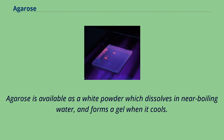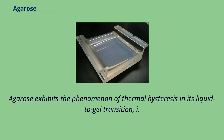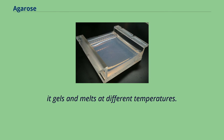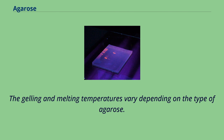Agarose is available as a white powder which dissolves in near-boiling water and forms a gel when it cools. Agarose exhibits the phenomenon of thermal hysteresis in its liquid-to-gel transition, i.e., it gels and melts at different temperatures. The gelling and melting temperatures vary depending on the type of agarose.